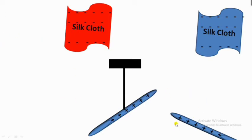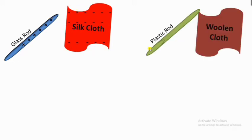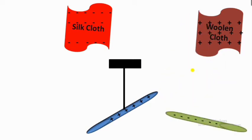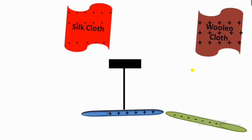From this experiment we can conclude that like charges repel each other, because both glass rods had the same charge. In the second case, when a glass rod and silk cloth are rubbed together, they get opposite charges. Similarly, when a plastic rod is rubbed with woolen cloth, the plastic rod gets negatively charged and the woolen cloth gets positively charged. When we bring the glass rod and plastic rod together, they attract each other.